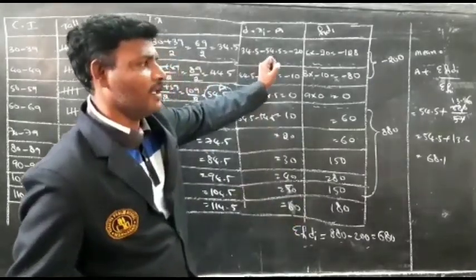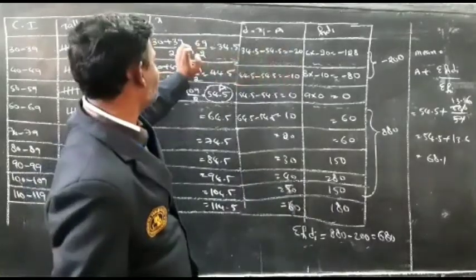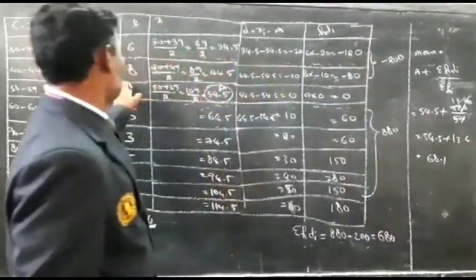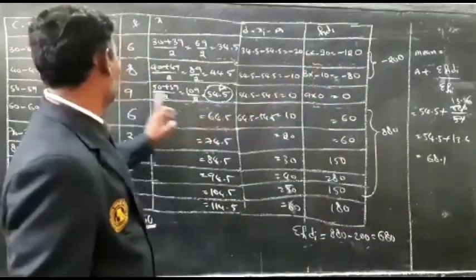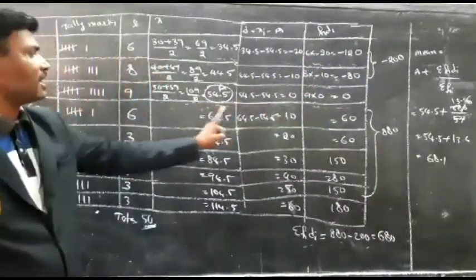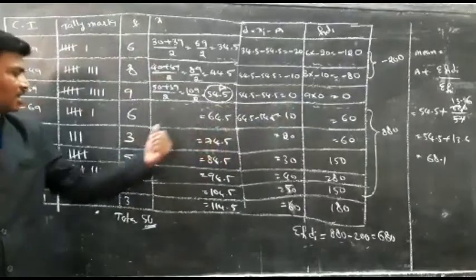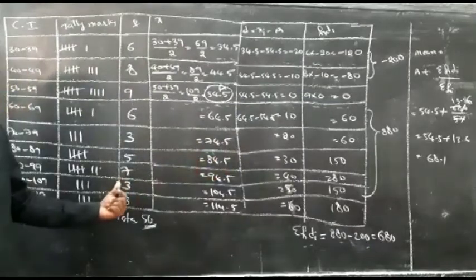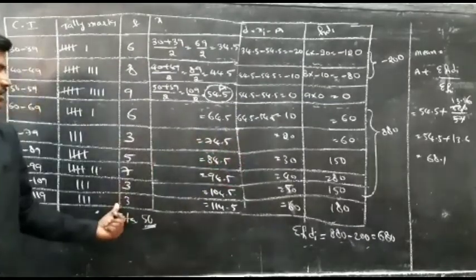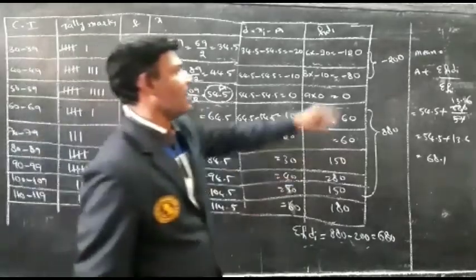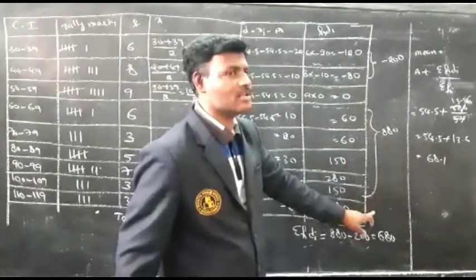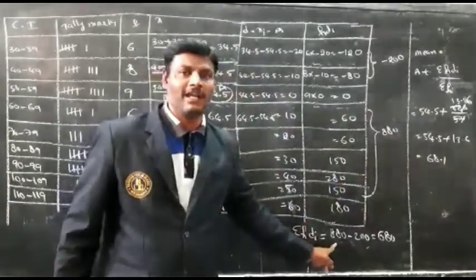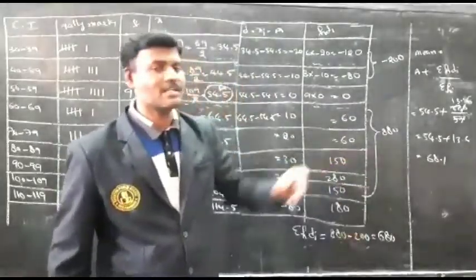Now find FiDi — the product of Fi and Di. 6 into minus 20 equals minus 120. 8 into minus 10 equals minus 80. 9 into 0 equals 0. 6 into 10 equals 60. 3 into 20 equals 60. 5 into 30 equals 150. 7 into 40 equals 280. 3 into 50 equals 150. 3 into 60 equals 180. Adding negatives: minus 200. Adding positives: 880. So Sigma FiDi equals 880 minus 200 equals 680.